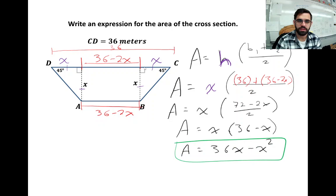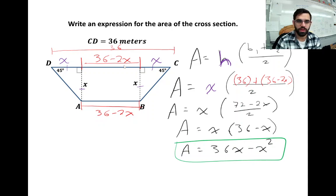Because there's a 45-degree angle here and a right angle here, the third angle must also be 45 degrees. A 45-45-90 triangle means this leg must equal x, which is also the height of the trapezoid. So if the whole length CD is 36, and we have x on each side from the 45-degree triangles, the remaining middle piece is 36 - x - x = 36 - 2x.